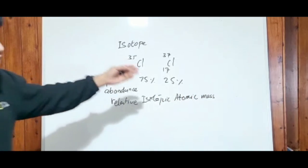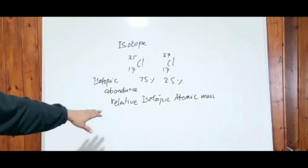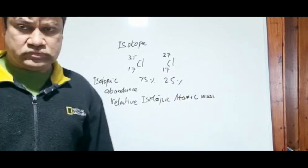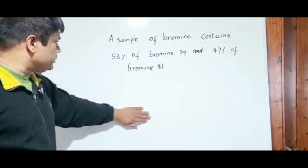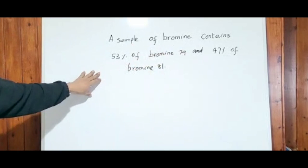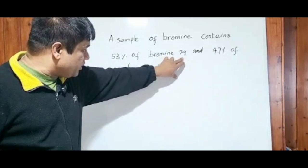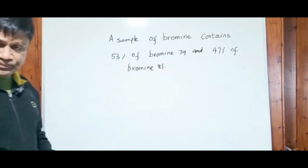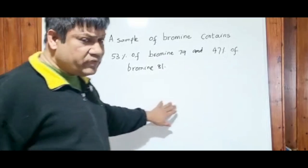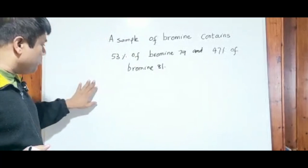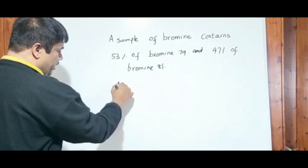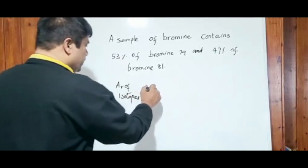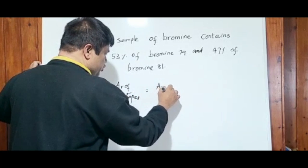We can work out the relative isotopic atomic mass — it's the same as AR but for isotopes. Let's work out a numerical example. A sample of bromine contains 53% of bromine-79 (AR = 79) and 47% of bromine-81 (AR = 81). Let's see how to calculate the relative atomic mass using isotopes. Just follow the formula.